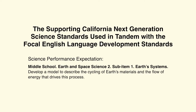The supporting California Next Generation Science Standards used in tandem with the Focal ELD Standards: The Science Performance Expectation is Middle School, Earth and Space Science 2, Sub Item 1 — Earth's Systems — where students who demonstrate understanding can develop a model to describe the cycling of Earth's materials and the flow of energy that drives this process. Watch for how this California Science Standard is addressed throughout the lesson.